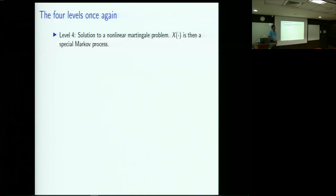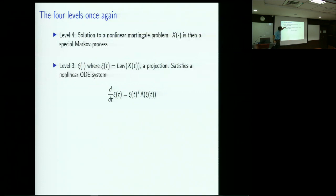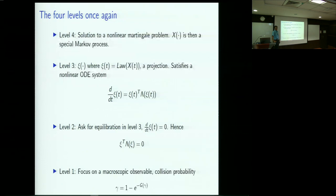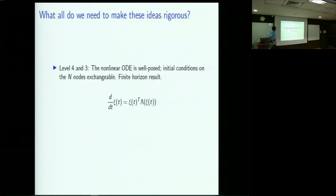Here is a summary of the four levels. Level 4 is a solution to a nonlinear martingale problem; x is a special Markov process with certain properties. Level 3 takes x(t) and looks at its law as a function of time, which solves a certain nonlinear ODE. Level 2 lets time go to infinity so things reach steady state, giving xi^T Lambda(xi) equals 0. Level 1 is basically looking at only macroscopic variables — in this particular case, collision probabilities and attempt rates. To make these ideas rigorous, the key assumptions are that nodes are IID and that the mean field limit can be justified as n goes to infinity.